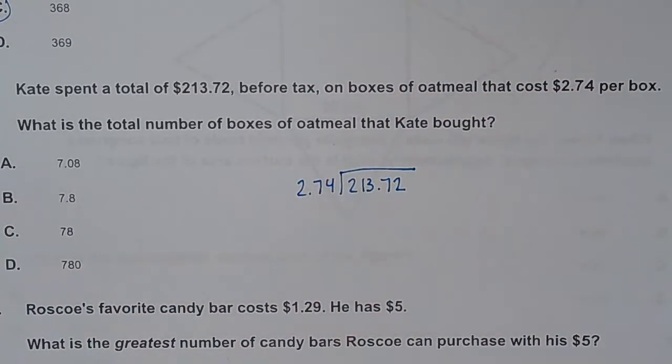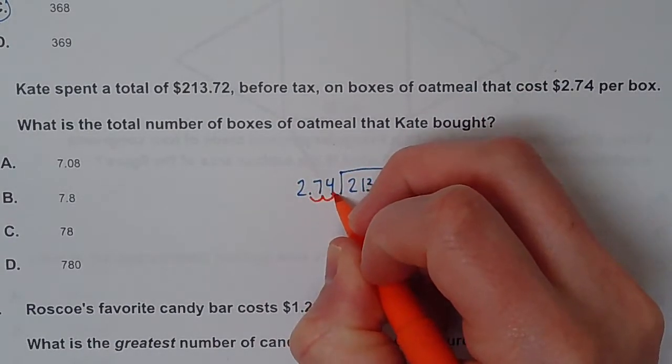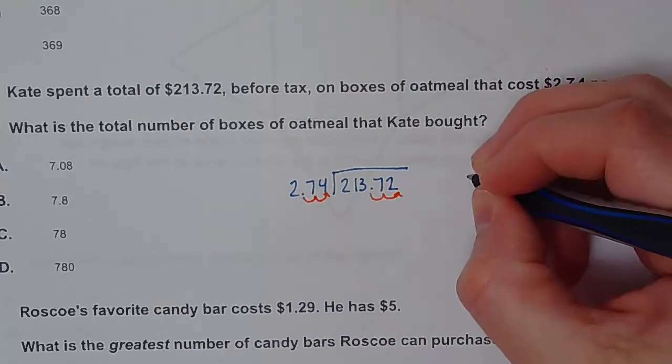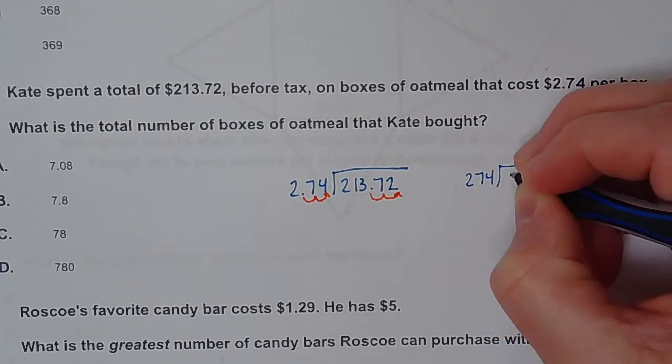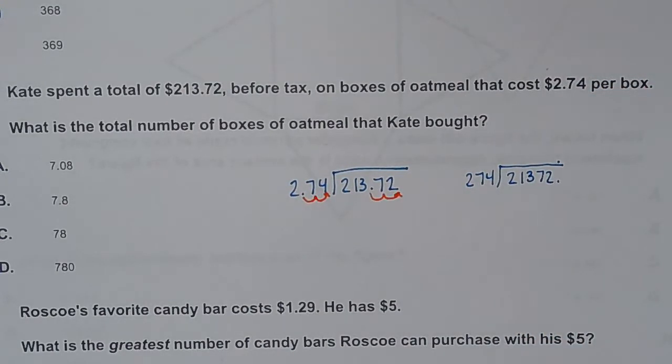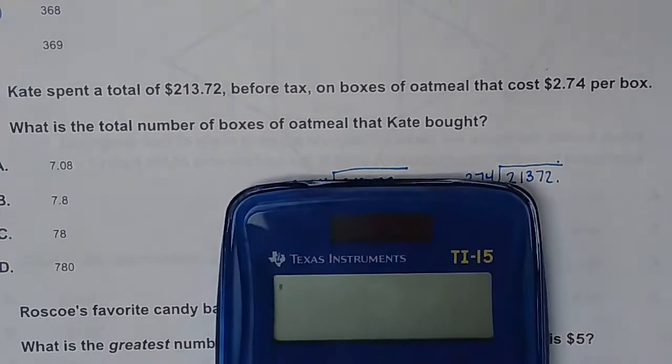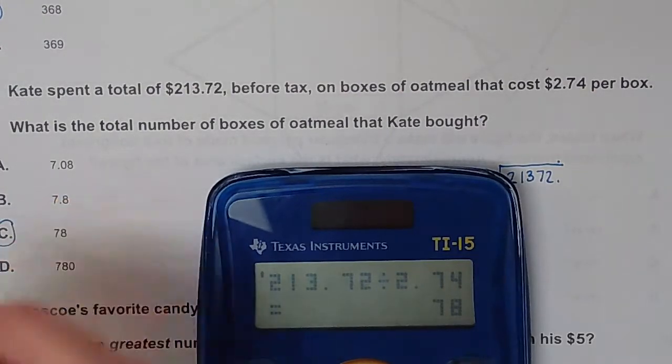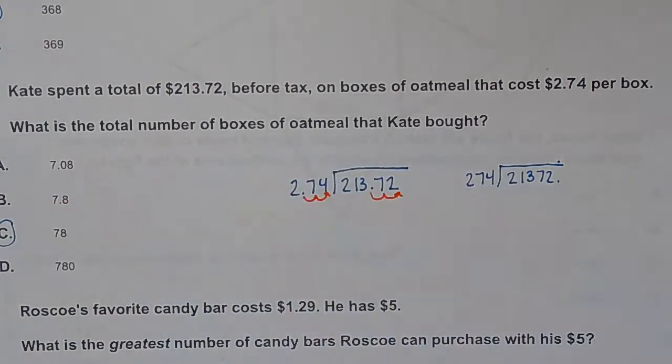You'd have to move your decimal because you have to have a whole number out here, so move it twice, which means you move this one twice. So this would become 274 into 21,372, and then your decimal will be at the end. Once again, for the sake of time, I'm going to divide it on the calculator. 213.72 divided by 2.74 leaves me with 78. So 78 boxes of oatmeal. That's a lot of oatmeal.